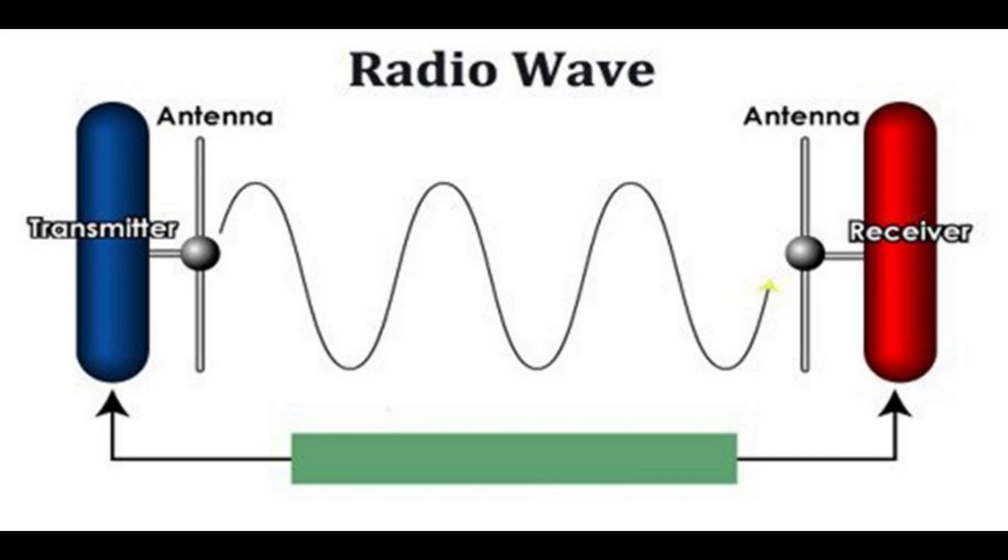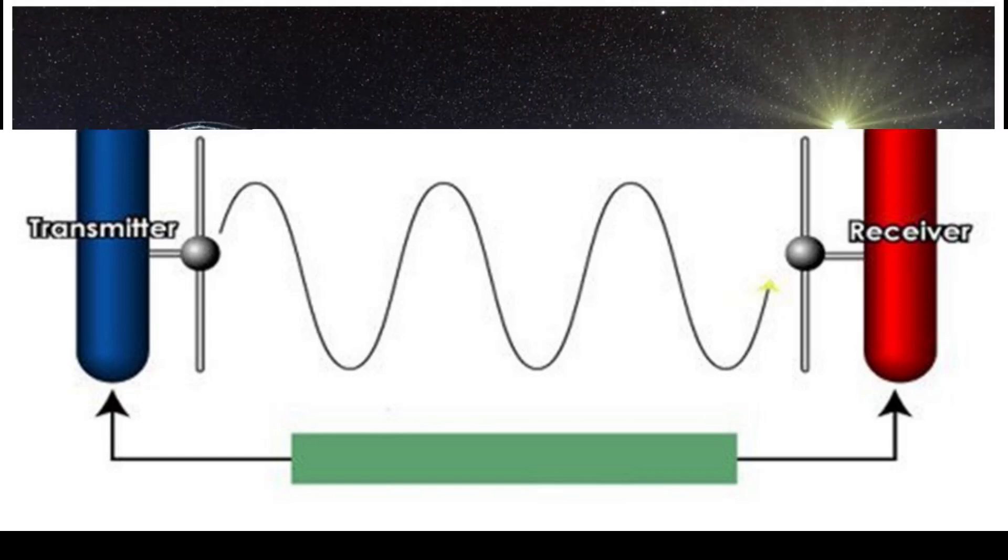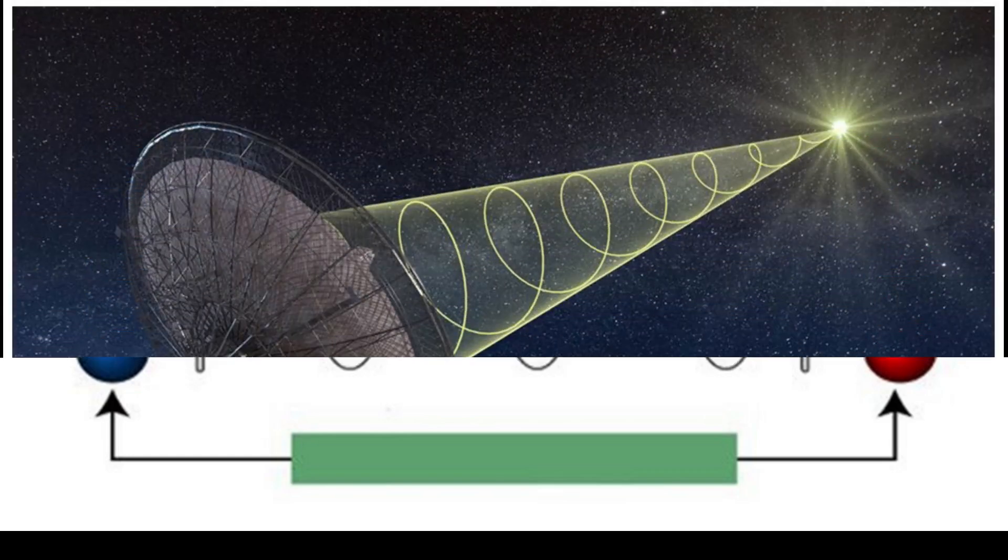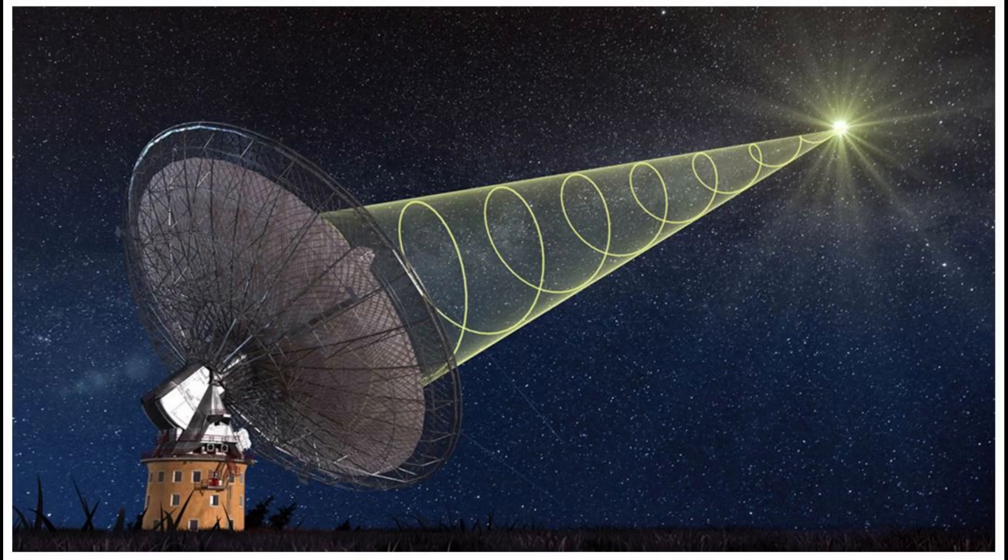Microwaves are short wavelength radio waves which we use for cooking and for communication. Microwaves have wavelengths between a few millimeters and tens of centimeters.